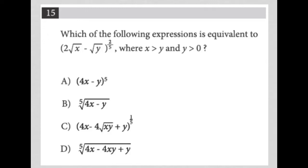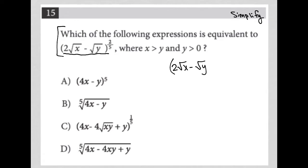This question looks like a simplification question. Simplified questions are typically very short — somewhere between one and three lines long — and they contain an expression or equation. In this case, we have an expression: (√x − √y) to the two-fifths power. The question asks which of the following expressions is equivalent to that, where x is greater than y and y is greater than zero.